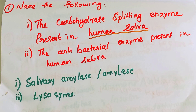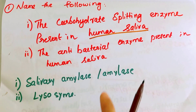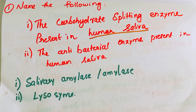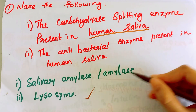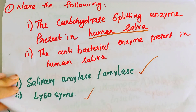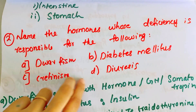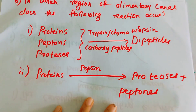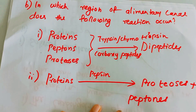The antibacterial enzyme present in human saliva is called Lysozyme. So in human saliva, there are two types of enzymes: Salivary Amylase, which splits carbohydrates, and Lysozyme, which is the antibacterial enzyme.